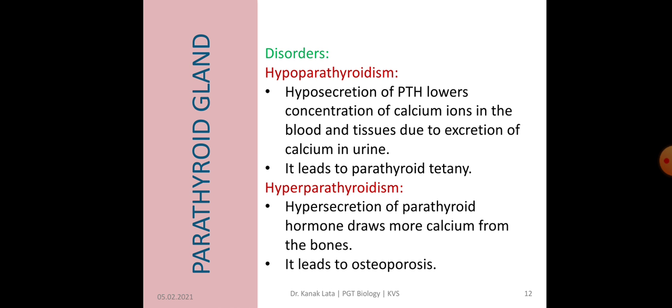Now let us see the disorders caused by irregularities of hormones secreted by parathyroid gland. There are two disorders: hypoparathyroidism and hyperparathyroidism. In hypoparathyroidism, there is hyposecretion of parathyroid hormone, which lowers the concentration of calcium ions in the blood and also in the tissue due to excretion of calcium in urine, and leads to parathyroid tetany.